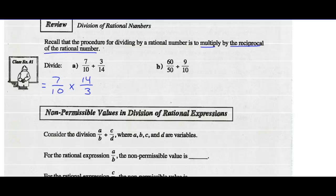Now we're going to try and see if we can reduce any numerator with any denominator. I notice that 10 and 14 are both divisible by 2. So I can go ahead and multiply my numerators. 7 times 7 is 49.